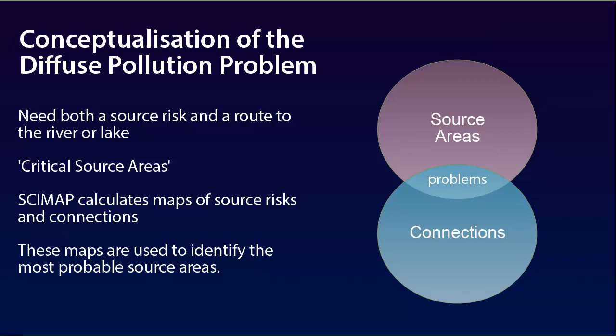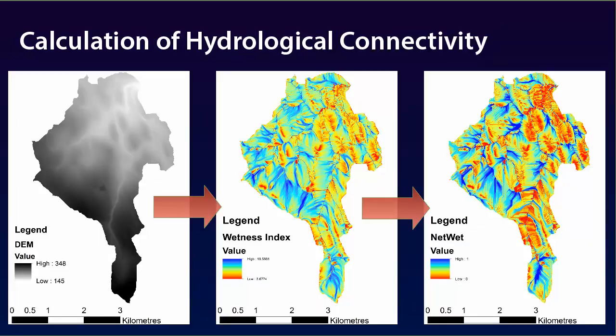The predicted pattern of hydrological connectivity in the landscape is calculated using terrain analysis based on detailed digital elevation models. The requirements for a hydrological connection are that a point in the landscape must be capable of generating overland flow, and there must be a route to the river that is capable of transmitting this flow. If the water were to infiltrate along the flow path, then the source location would become disconnected.